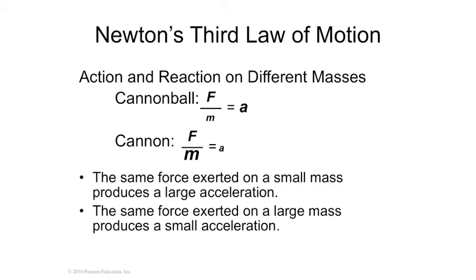So with the cannonball — the small mass — since a cannon weighs more than the cannonball, the same force divided by a little mass gives a big acceleration. For example, 10 divided by 2 is 5. But if the mass of the cannon is huge — say 10 divided by 100 — you get an acceleration of 0.1. So the smaller the mass, the greater the acceleration.